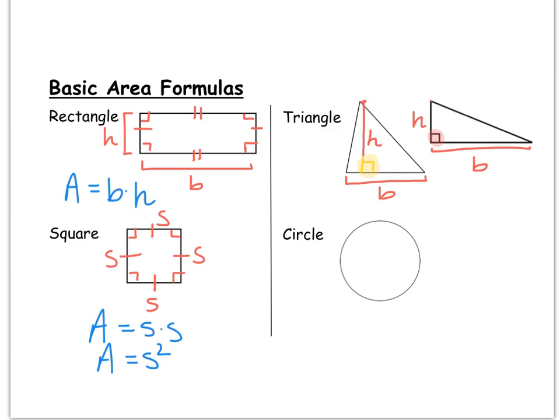To calculate the area of a triangle, you use one-half times the base times the height. Here's why it's one-half: at least in the case of a right triangle, you can see it as being half of a rectangle with the same base and height. That rectangle made by the dashed lines would have an area of base times height, and the right triangle takes up exactly half that space.